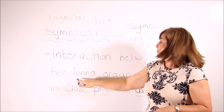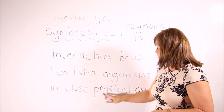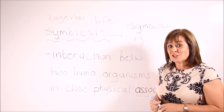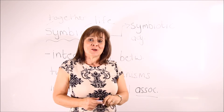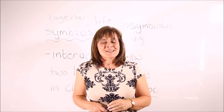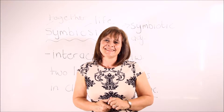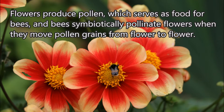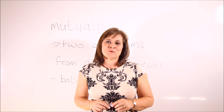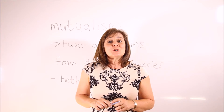Symbiosis is a relationship and interaction between two living organisms in close physical association with each other. We use the adjective 'symbiotic' to refer to this relationship. There is a symbiotic relationship between bees and the plants they pollinate. Flowers produce pollen which serves as food for bees, and bees symbiotically pollinate flowers when they move pollen grains from flower to flower.